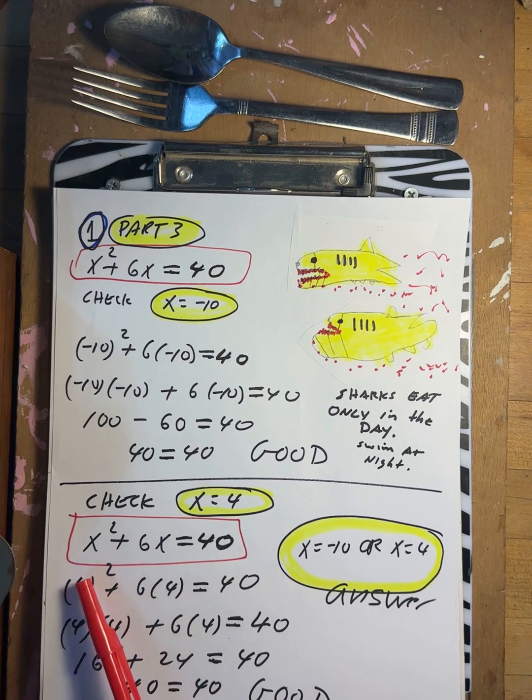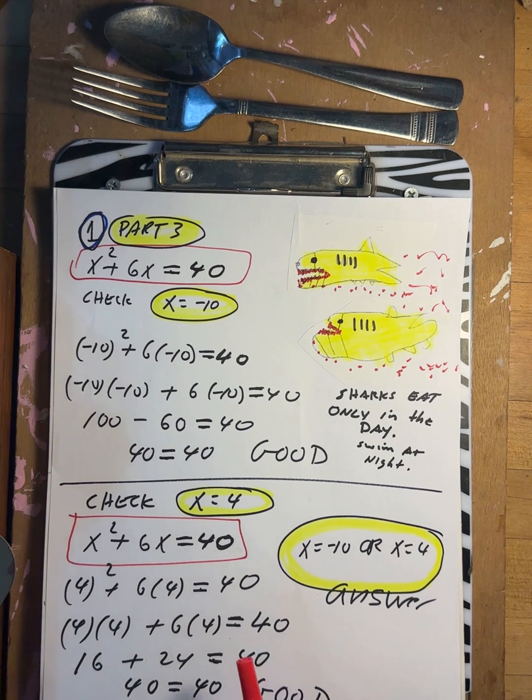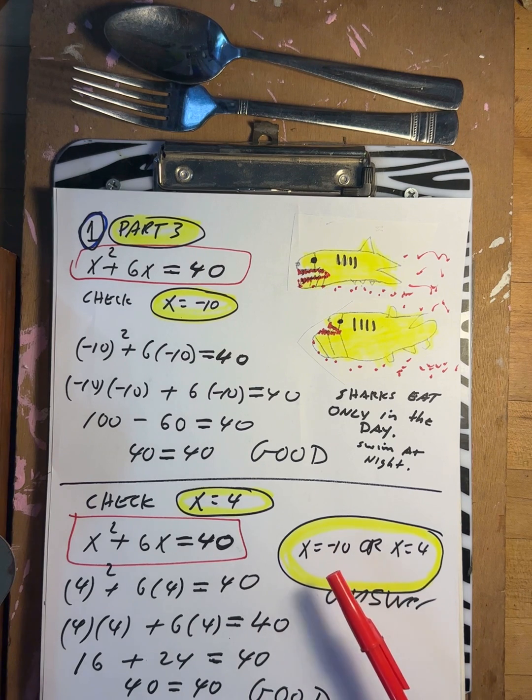Try 4. 4 squared plus 6 times 4. 4 times 4 is 16, 6 times 4 is 24. 16 plus 24 is 40. Is 40 equal to 40? Yes, good. So that means that x is negative 10, x is 4. They both work.